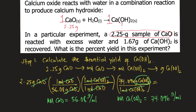If you plug this equation into your calculator, you will solve for the theoretical yield of calcium hydroxide, which is equal to 2.97 grams of calcium hydroxide. So this is your theoretical yield.